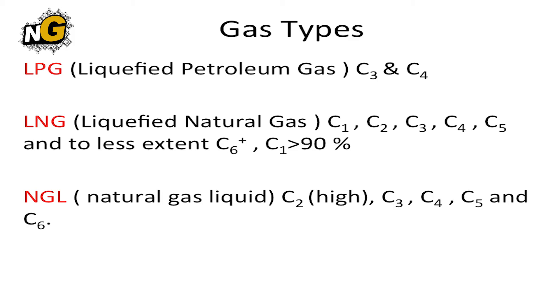The importance of natural gas is that it can be used as an energy source, as a dry gas like LNG and LPG, in petrochemical industries, and it can also be used to recover sulfur and carbon dioxide.